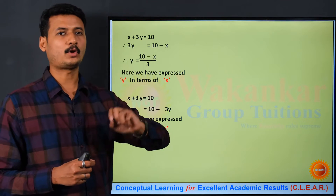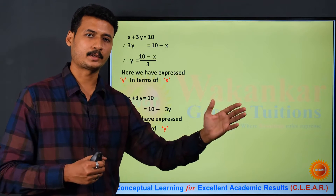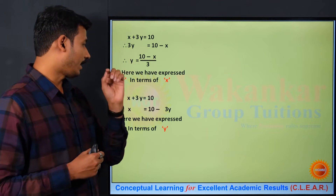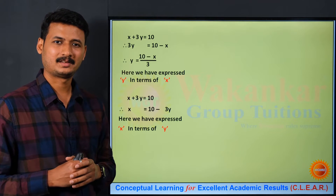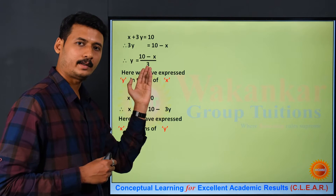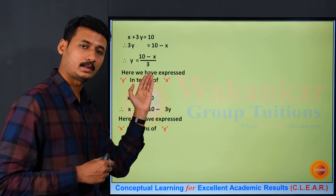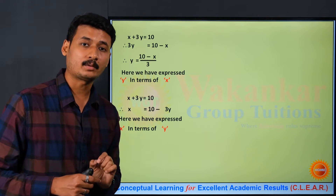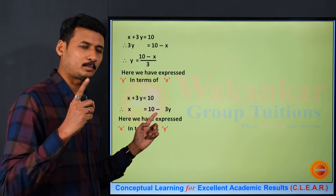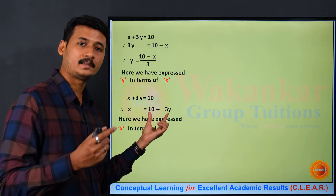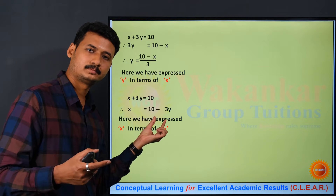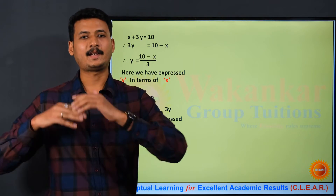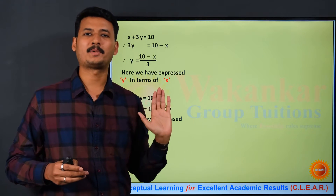It is very important to know this in order to solve any two equations by substitution method — we must know how to express one variable in terms of the other. The key thing to note is how to avoid the denominator. If any variable has a coefficient other than 1, a denominator will appear. If given a choice, we will select the variable whose coefficient is 1 and express that variable in terms of the other to avoid the denominator.